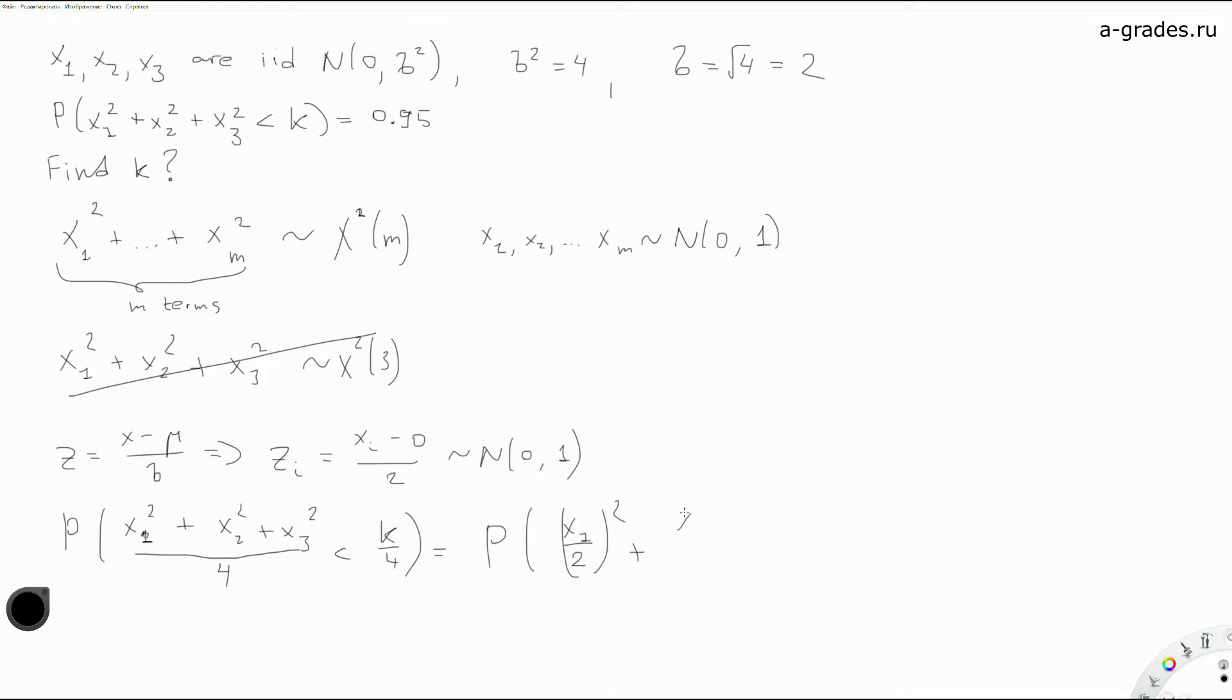We may notice that each of these three terms is standard normally distributed. So we see that it's z squared, z squared, z squared. And this is equivalent to saying that chi-square with three degrees of freedom is less than some k divided by four, and this must equal 95 percent.